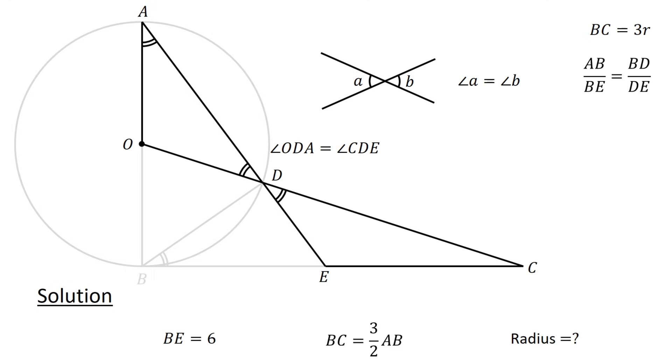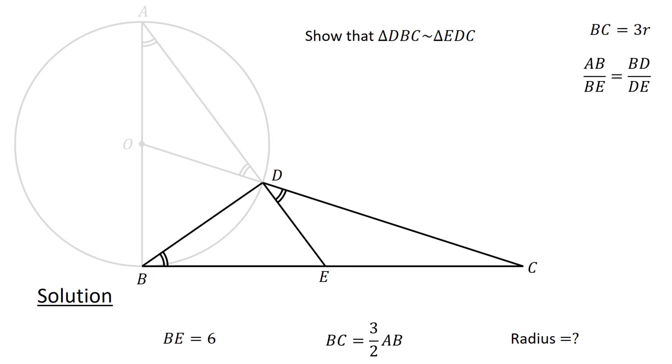Finally, consider triangle DBC and triangle EDC. Let us show that these triangles are similar. Since angle DBC equals angle EDC, and this angle is common to both triangles, by the AAA similarity theorem, triangle DBC is similar to triangle EDC. Since corresponding sides in similar triangles are proportional, we have BD over DE equals BC over CD equals CD over CE.